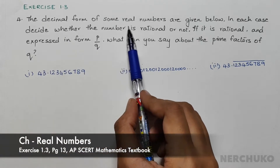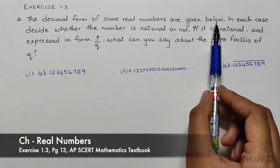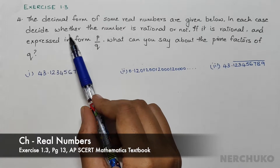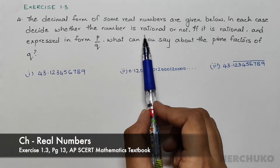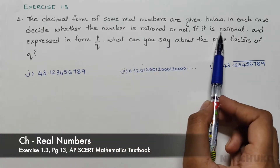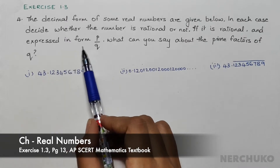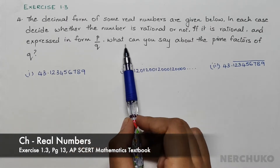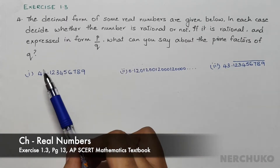The decimal form of some real numbers are given below. In each case, decide whether the number is rational or not. If it is rational and expressed in the form of P by Q, what can you say about the prime factors of Q?